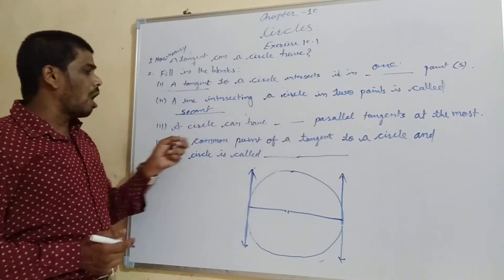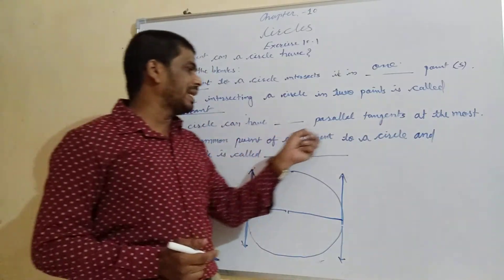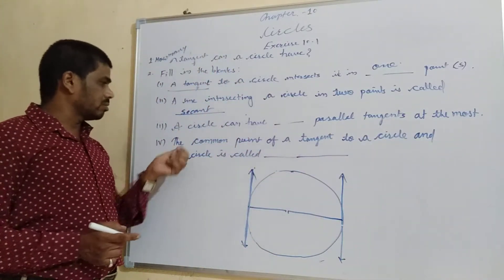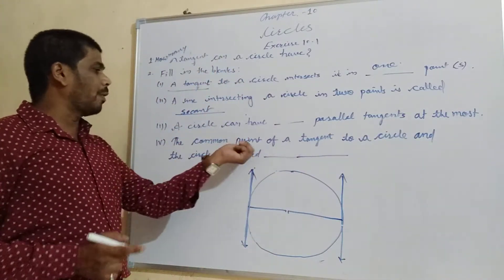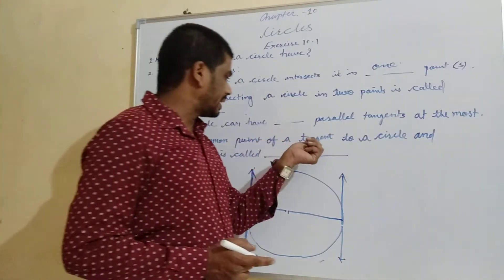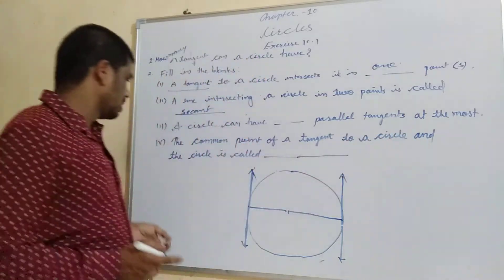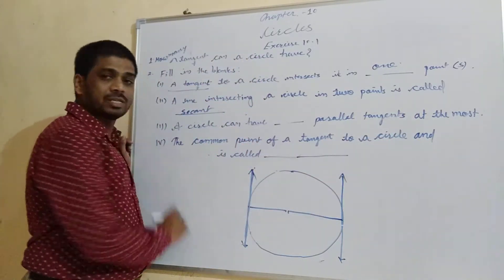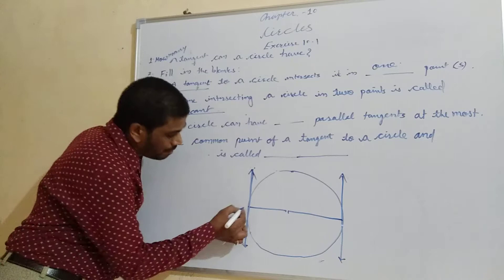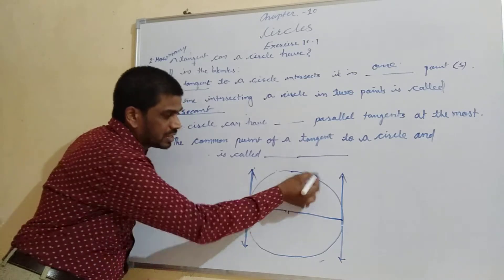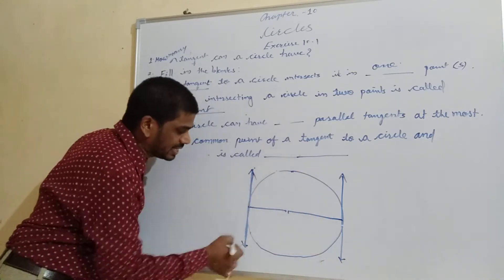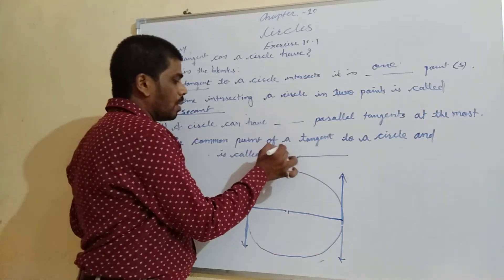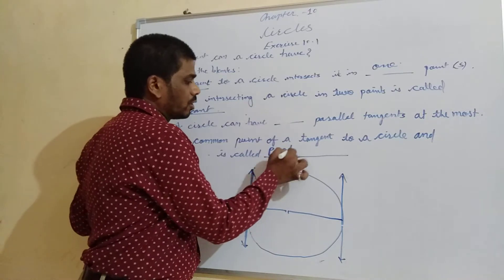The third blank: the common point of a tangent to a circle is called the point of contact. So the answer is point of contact.